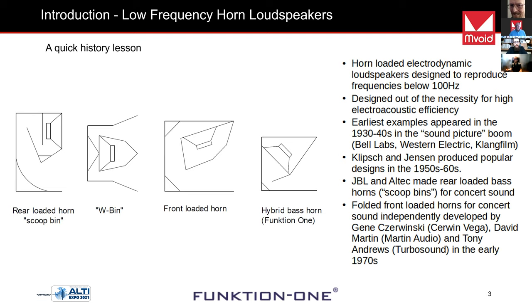Bass horns continued to be used through the 20th century. Into the late 60s and 70s, JBL and Altec were doing rear-loaded horns, as shown diagrammatically on the left. What we still develop today at Function One is called a folded front-loaded horn, of which there are three schematic examples. The second is a W-bin — the sound channel is essentially W-shaped. There's also a C-shaped front-loaded horn with a long horn path. These various types were independently developed by a few different people in the early 1970s.